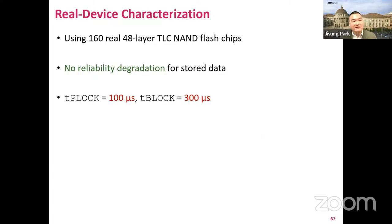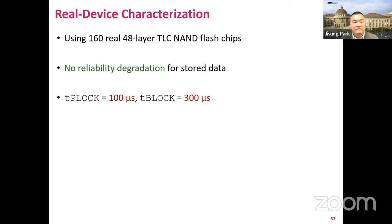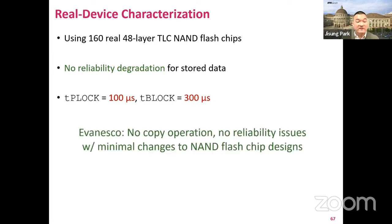In this example, the target page's access permission flag is disabled — meaning the cell value is zero — which disables the bridge transistor and thus disconnects the page buffer from the data-out circuitry. So reading the page always returns all-zero data regardless of the actual values stored in the page buffer. We validated the reliability of Evanesco via real device characterization of 160 TLC NAND flash chips, and our results show that Evanesco does not compromise the reliability of NAND flash memory if we set the latency of P-Lock and B-Lock to 100 microseconds and 300 microseconds respectively.